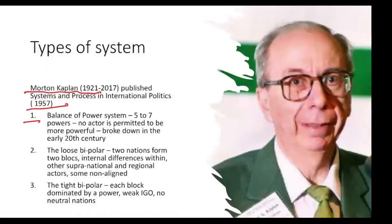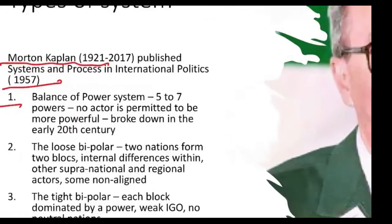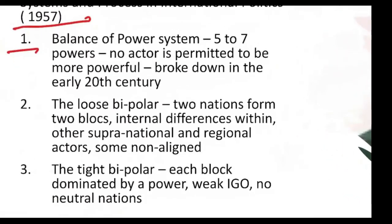The first system is called the balance of power system. The balance of power system is what we call multipolar. He said usually there would be between five to seven actors. You call this a balance of power system when no actor is permitted to be more powerful. This multipolar system was there at one time and broke down in the early 20th century.